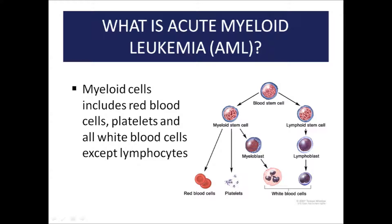Normally, the myeloid stem cells mature into white blood cells that fight infections, red blood cells that carry oxygen, and platelets that enable clotting. In acute myeloid leukemia, they lose the ability to differentiate or mature into one of these cells. When they can't differentiate, they start to build up in the bone marrow, preventing it from making normal blood cells. They can also spill into the bloodstream and circulate around the body.